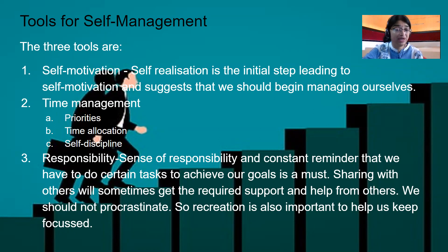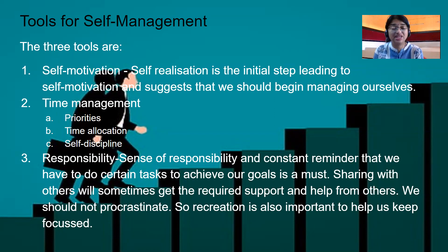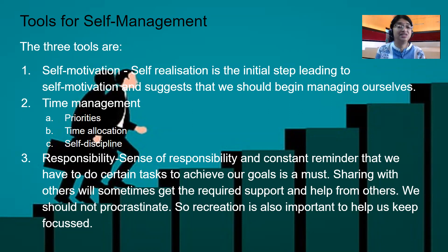The next tool is time management. There are three important concepts under time management: priorities, time allocation, and self-discipline. Priorities means, suppose I have five tasks to do — I decide which is first, which is second. In that way, I know which has to be given the first preference and which the second. Once I know my priorities, I can allocate the time. If I allocate the time — one hour for this task, half an hour for this task — this itself brings a sense of self-discipline.